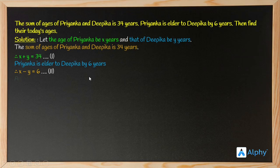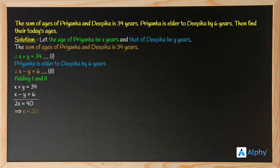Now we just have to solve these two equations. Adding equation one and equation two, the y terms eliminate — plus y and minus y cancel out — giving us 2x equals 40, that is 34 plus 6. So x equals 20, meaning Priyanka's age is 20 years.